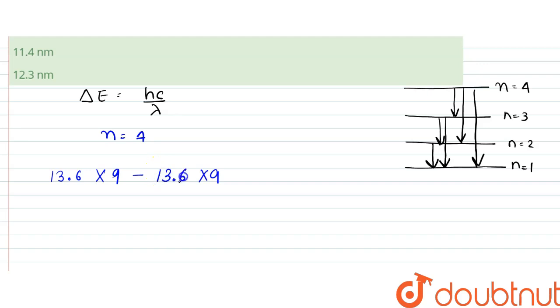So, first of all, I will write 13.6 divided by four square. That is 16. The formula is delta E to be equal to 13.6 z square by n square. That is the energy of nth level of hydrogen-like atom.